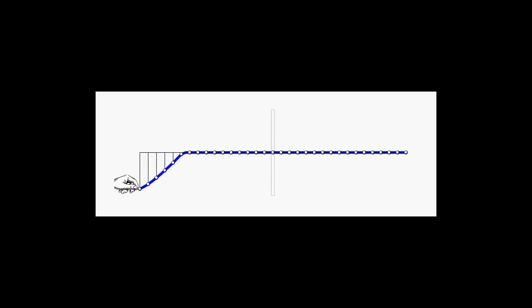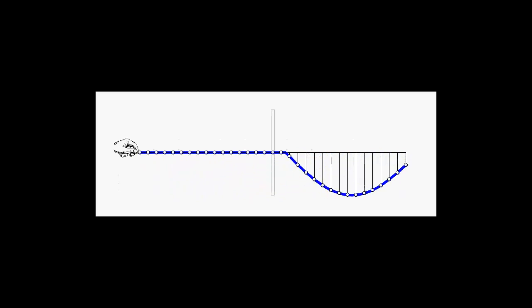This time the left end of the rope is moved in the negative y direction and back to its initial position. Again, element after element of the rope begins moving in the negative y direction and back to the initial position.